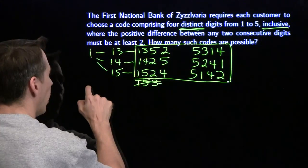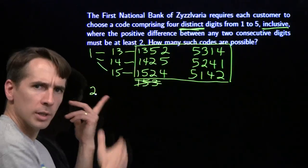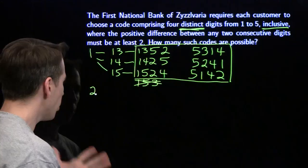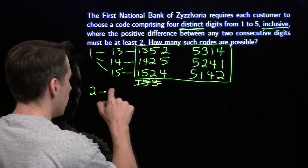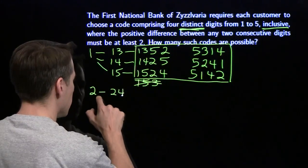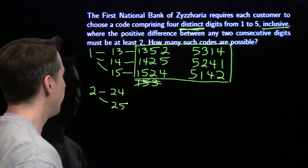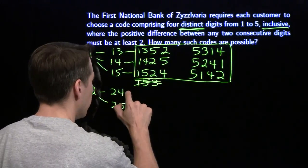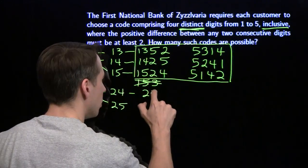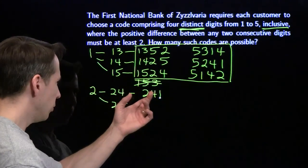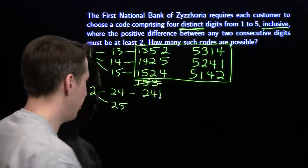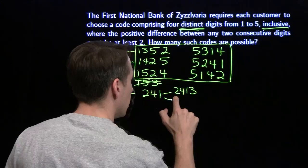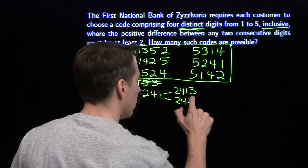Now let's look at what happens when we start with two — and while we tackle starting with two, we're also tackling starting with four by symmetry. Starting with two, we can't put a one or three next, so we only have two options: 2-4 or 2-5. If we start 2-4, we can't put a three or five after that, so we go 2-4-1. Then we can put a three or five after the one: giving us 2-4-1-3 and 2-4-1-5.